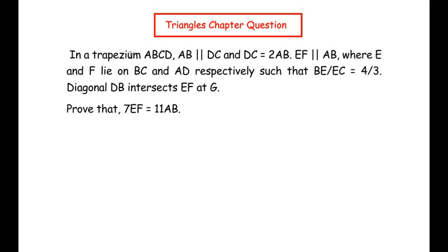In a trapezium ABCD, AB is parallel to DC and DC is equal to 2 times AB. EF is parallel to AB, where E and F lie on BC and AD respectively, such that BE over EC is equal to 4 over 3. Diagonal DB intersects EF at G. Prove that 7 times EF is equal to 11 times AB.